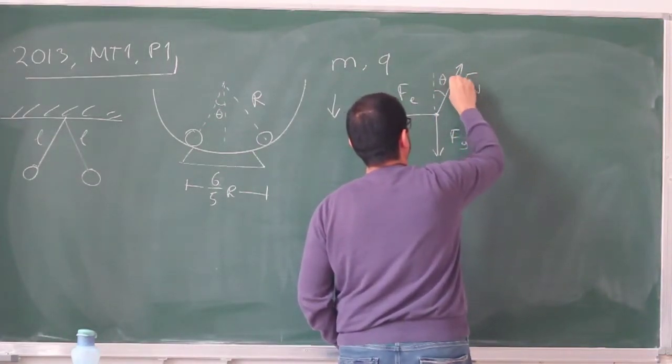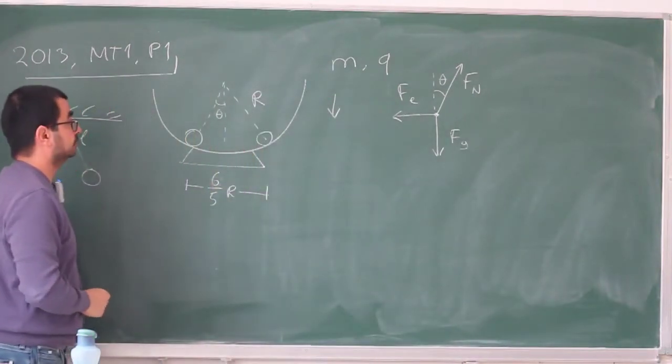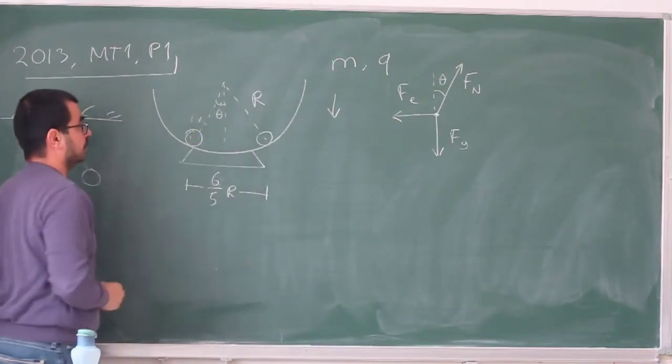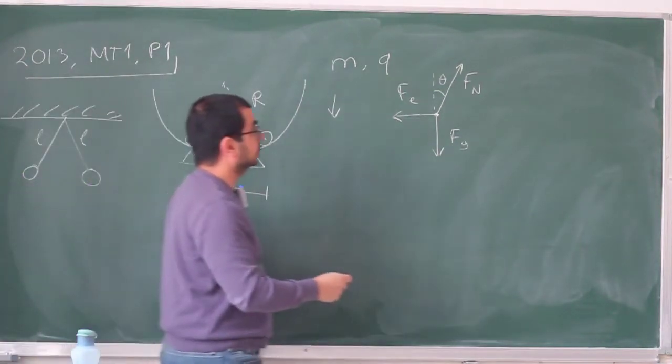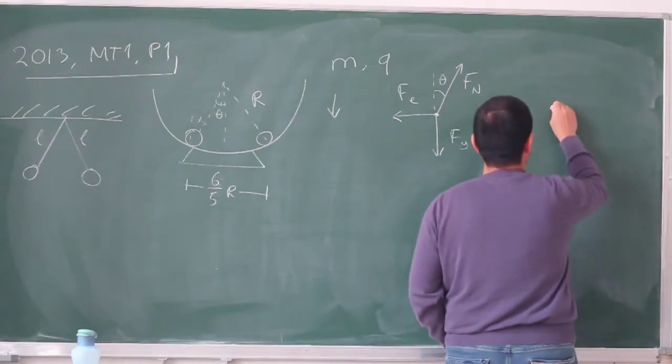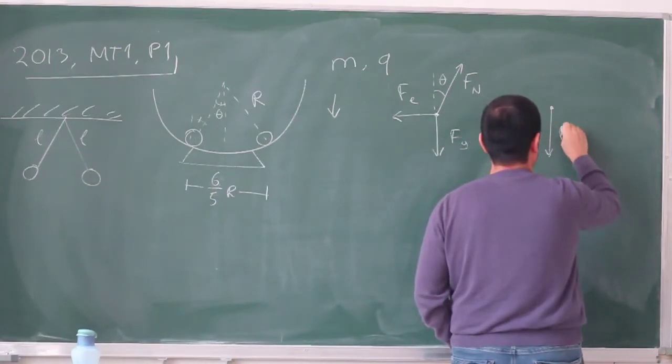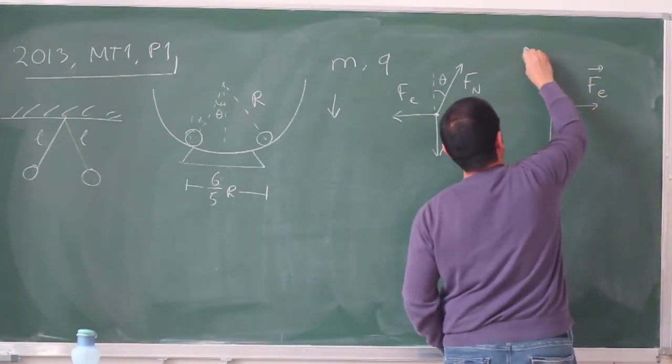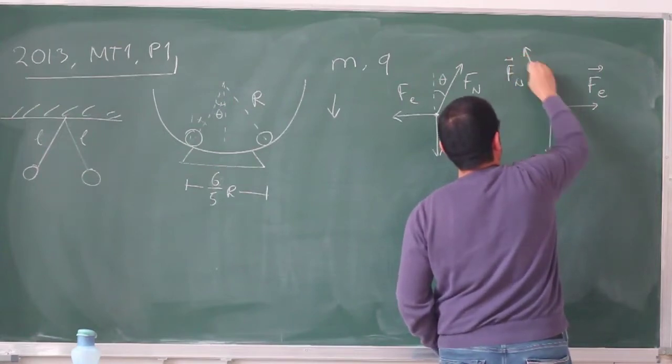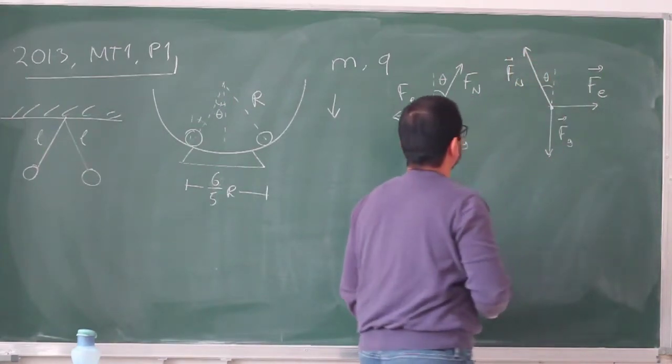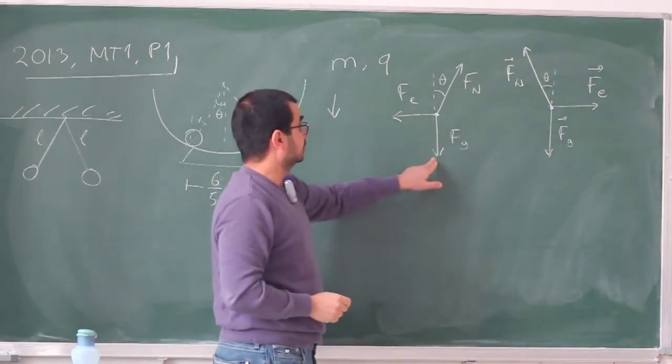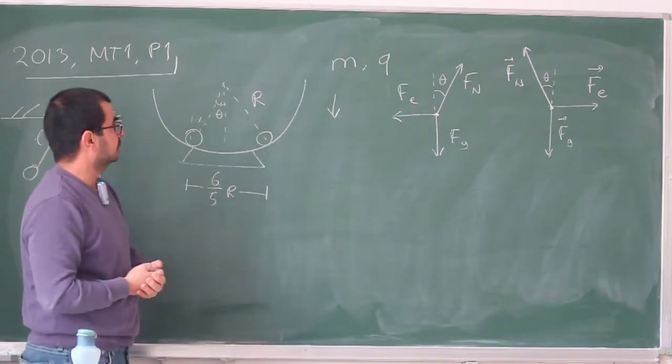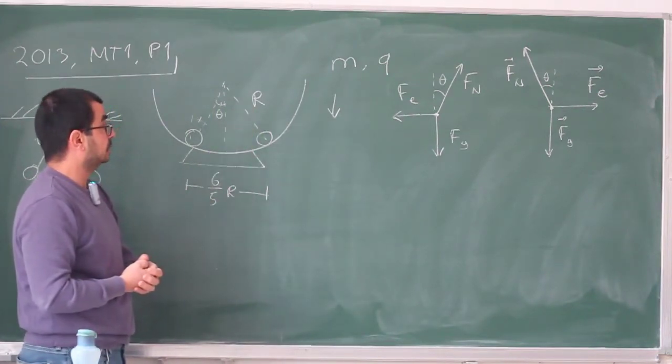And this angle is also going to be theta, the same as that angle. So if you draw it this way, normal is this way, this angle is the same as that one. Now for the right mass, we are going to have the mirror symmetric of this. We have gravity, we have electric force, and we have the normal force. And it's not very important, but in both cases, the normal force is canceling the vector sum of these two. So you might want to draw something that makes sense, that's reasonably accurate.